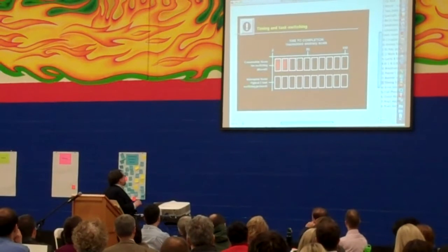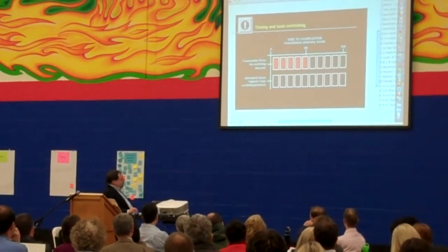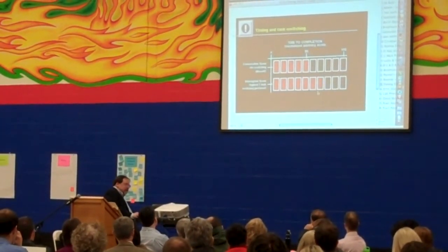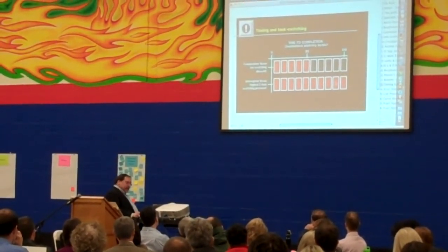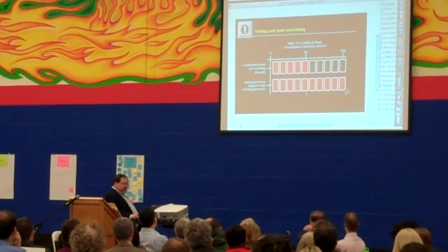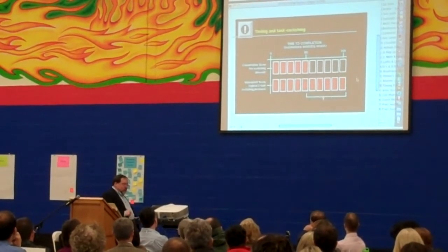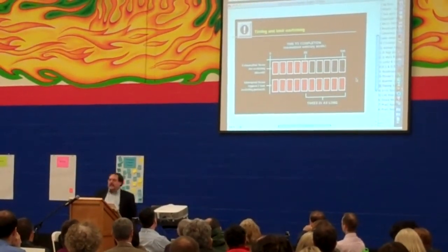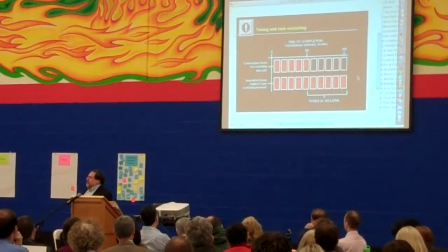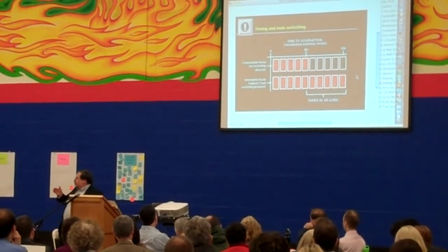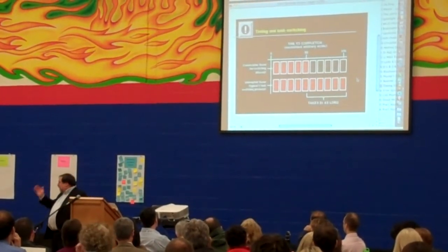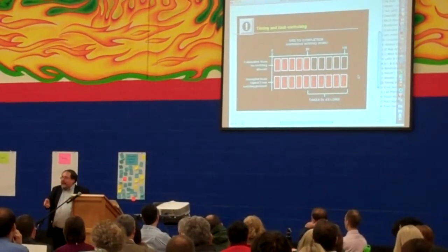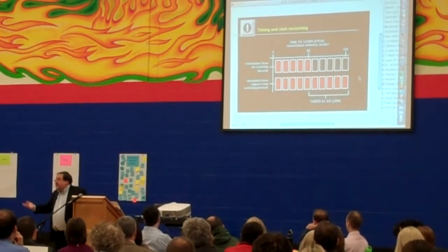It looks like this. Consecutive score, no switching allowed — that's how many you get done. In an interrupted protocol, it takes you twice as long to finish the math problems. Often thought that if you get interrupted, you don't know where you are and have to backtrack, so that burns up time.